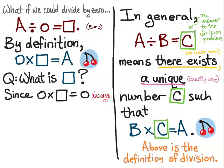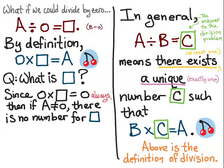Since zero times box is equal to zero always, it doesn't matter what we put in the box, that equation will always be true. Then if A is not equal to zero, there's no number for what goes in the box, and the problem with this is it contradicts our requirement that there exists some number C that goes in the box.